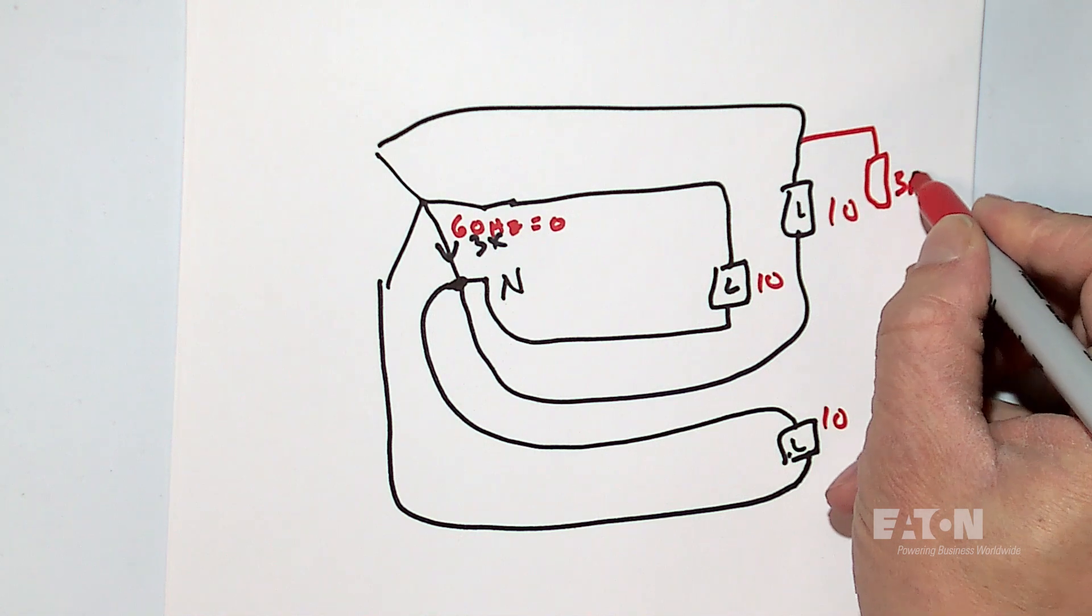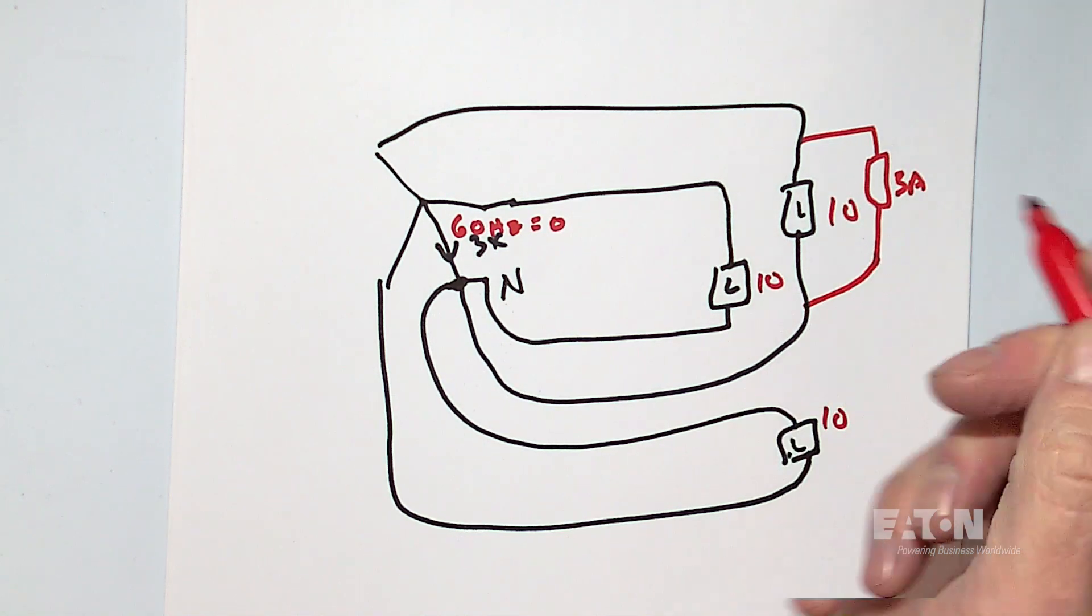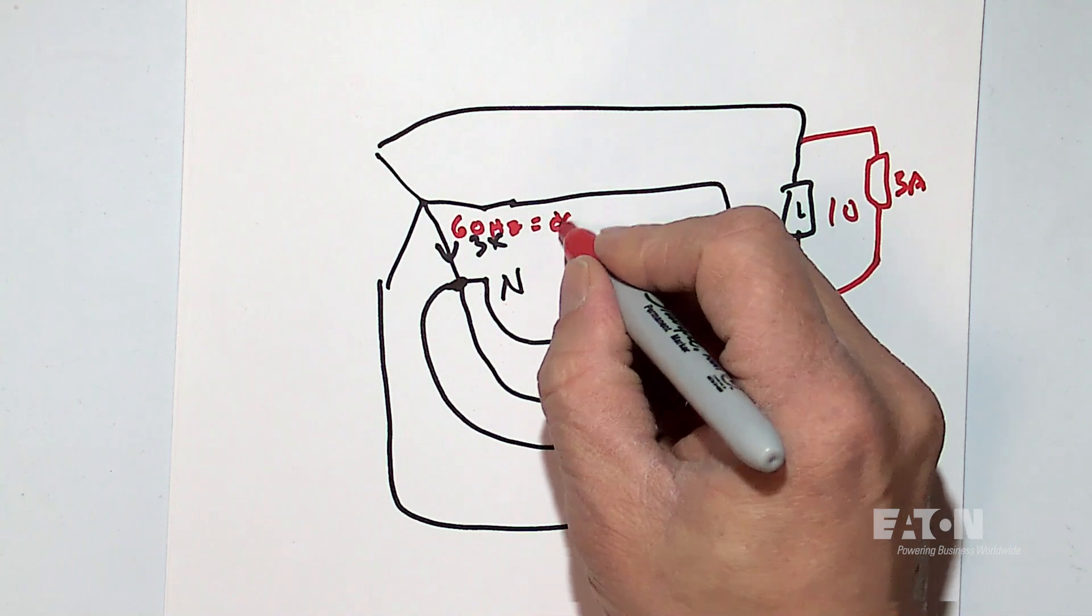And we had three amps. So the difference in current, therefore, could be maybe three amps. So it's not zero, three amps.